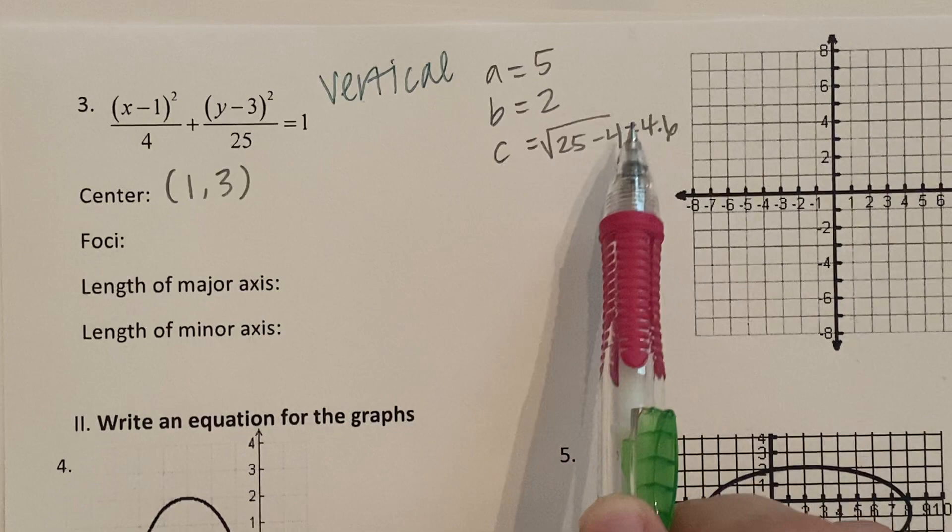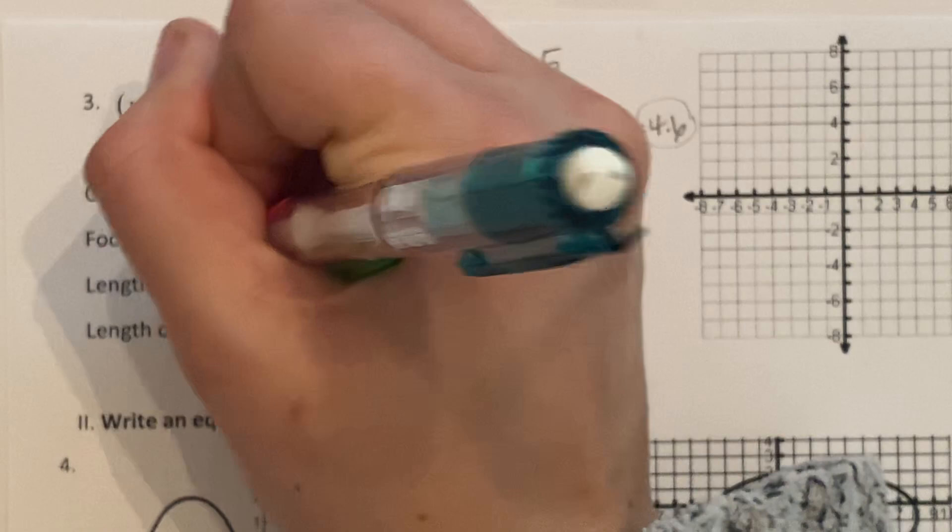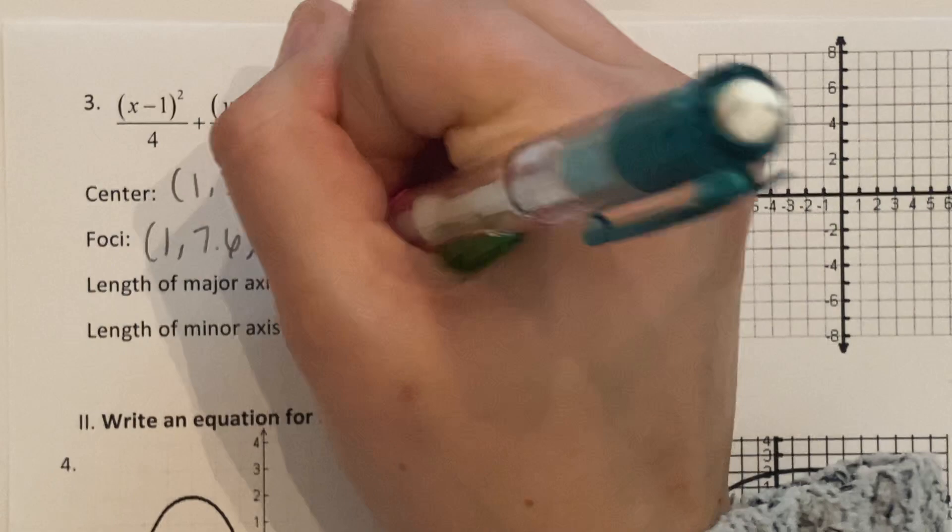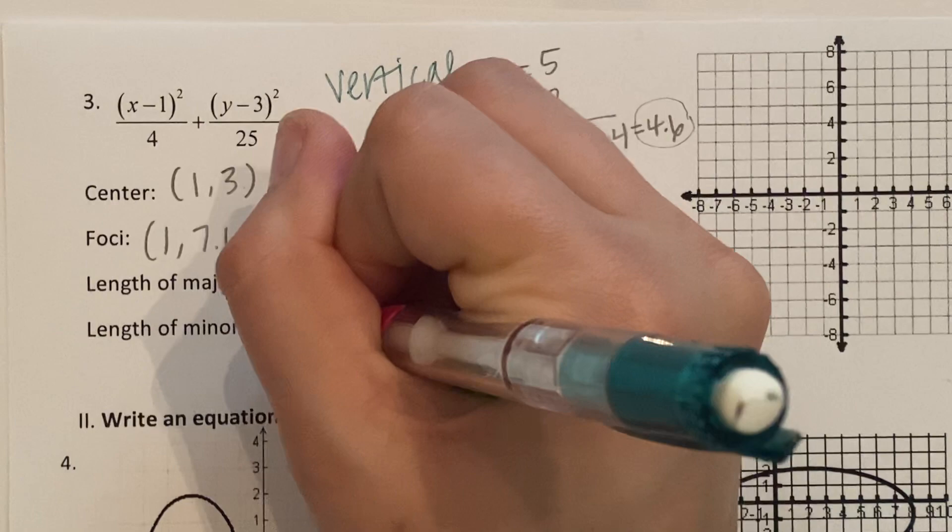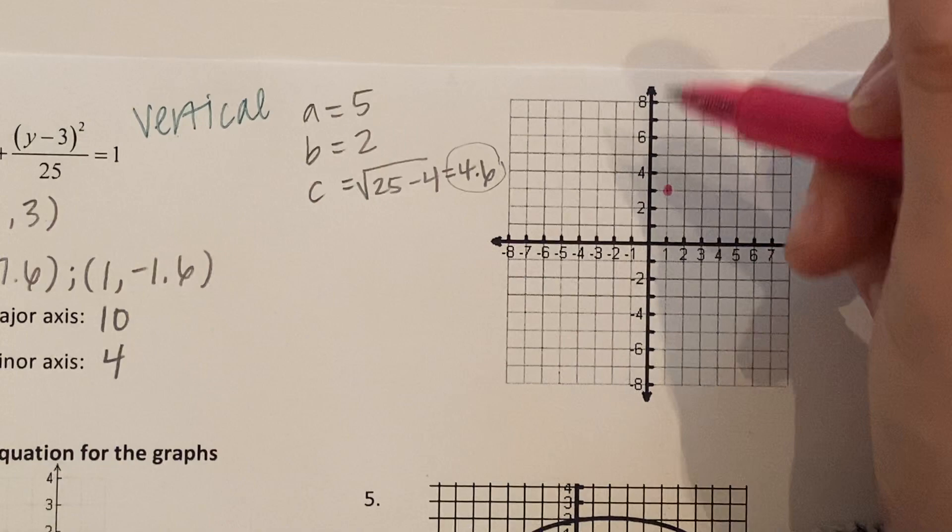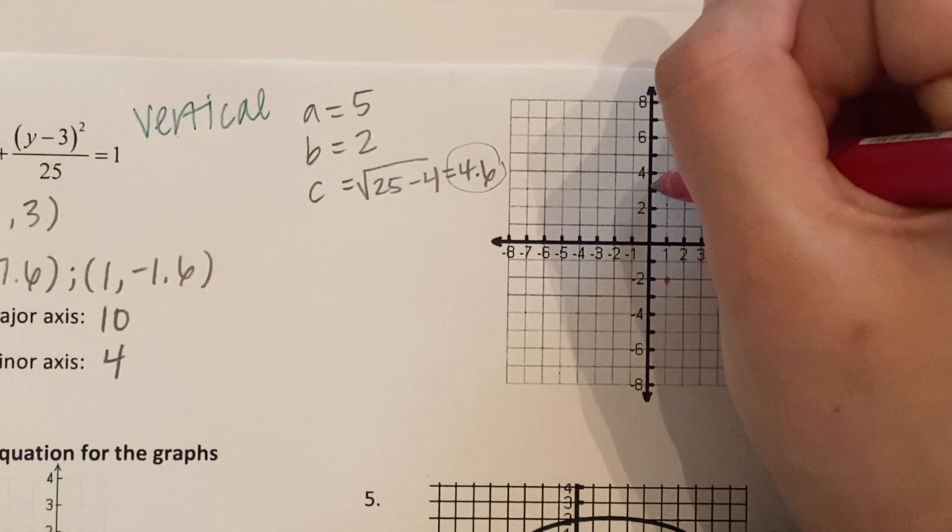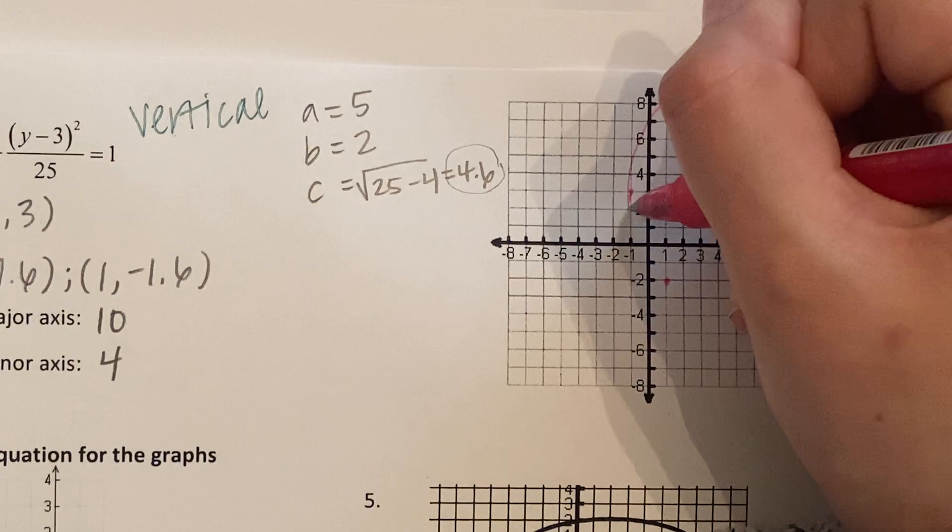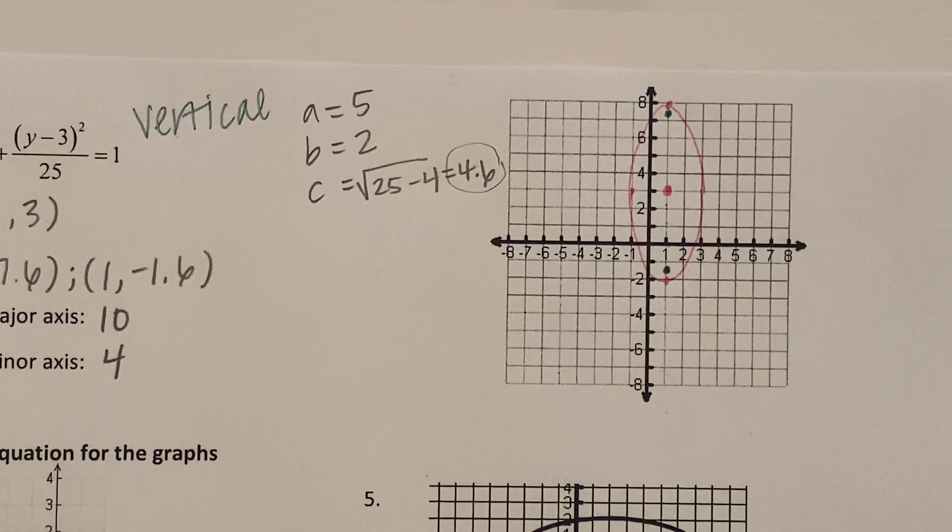Your center you said was positive one, positive three. And since it was vertical, you added and subtracted this 4.6 to the Y value. So leave X alone. 4.6 plus 3 is 7.6. And then your other one, leave X alone. 3 minus 4.6 is negative 1.6. Major axis is twice the A. Minor axis is twice the B. So now all you had left to do is graph. So you said 1, 3. And then it's vertical. So you went up and down the bigger number, up and down 5. And left and right 2. Let's plot the foci. 7.6, negative 1.6. Did you get it right? Give yourself a high five. Good job.